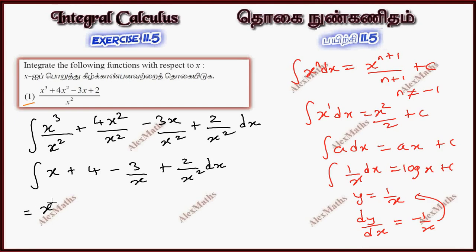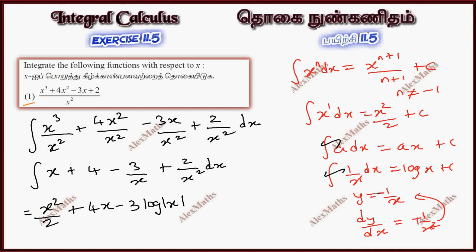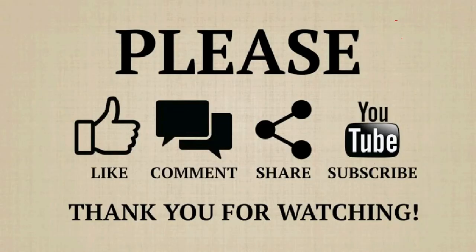Integration of x is x²/2 plus constant. Then 4x. Minus 3 times 1/x is integration of log|x|. Then 1/x² is integration of minus 1/x, so minus 2/x plus C.